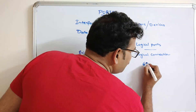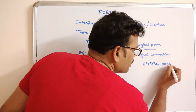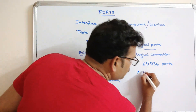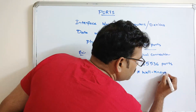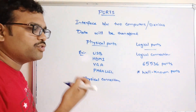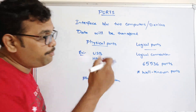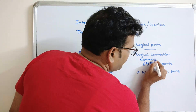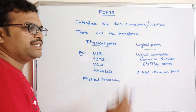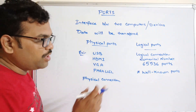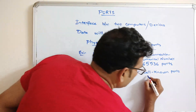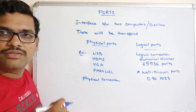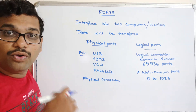Our system has around 65,536 ports through which data can enter. Every logical port has a numerical number assigned to it. These 65,536 ports are categorized into three types. The first is well-known ports, which are numbered from 0 to 1023. These are reserved for specific purposes — they are also called reserved ports.